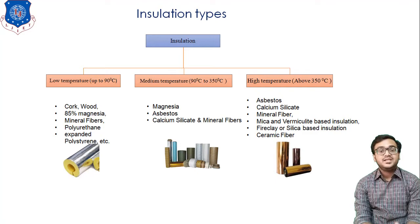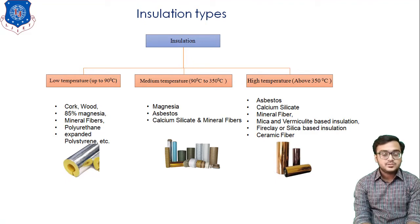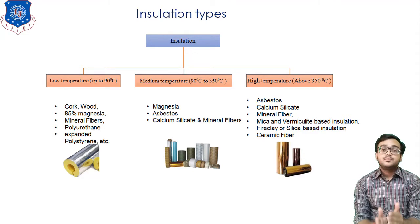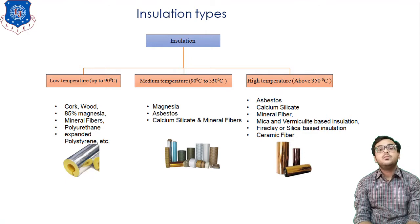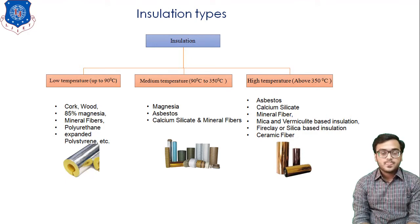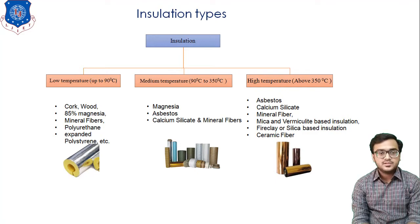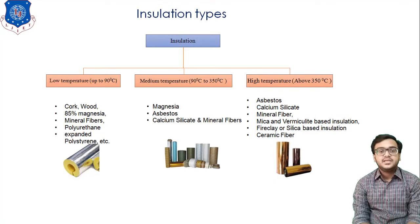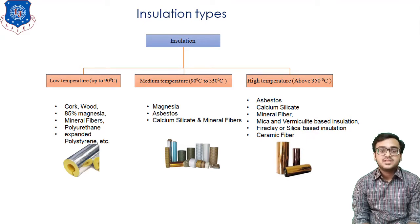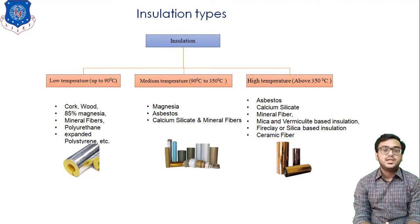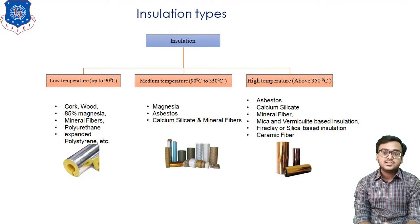Asbestos serves as a perfect insulator. Whenever we are selecting any insulator, the prime requirement is to observe the thermal conductivity of the material — the material having low thermal conductivity is the most suitable for insulation applications. For high temperature insulation we have several materials: asbestos, calcium silicate, mineral fiber, mica, fire clay, and ceramic fiber.